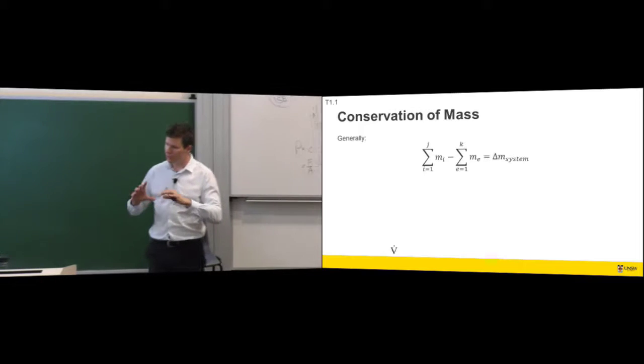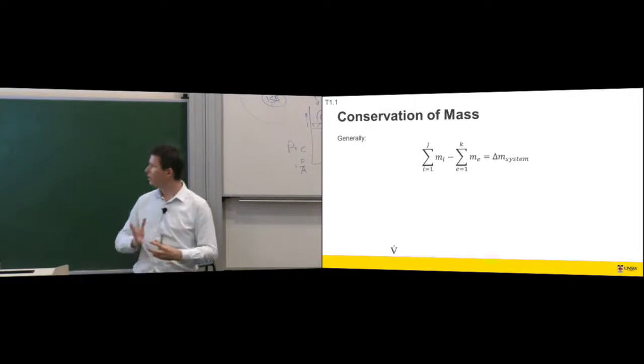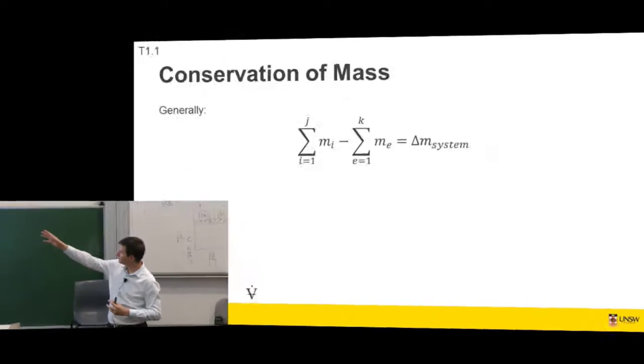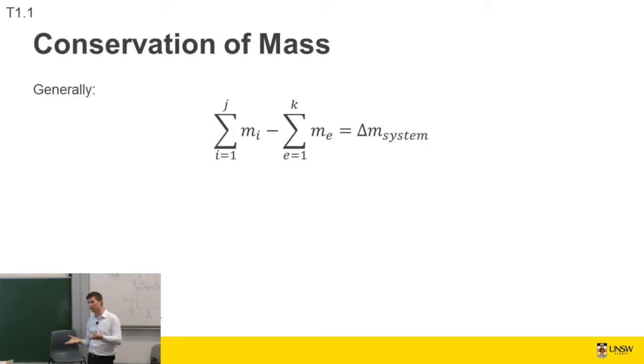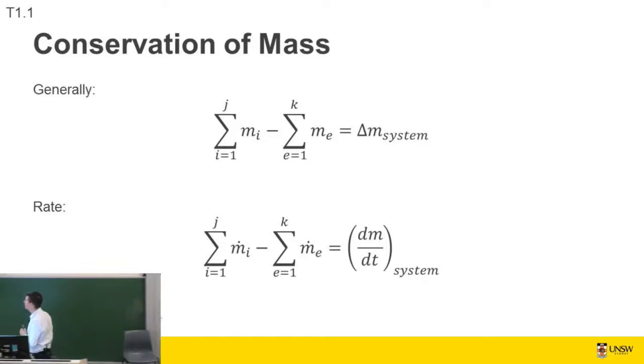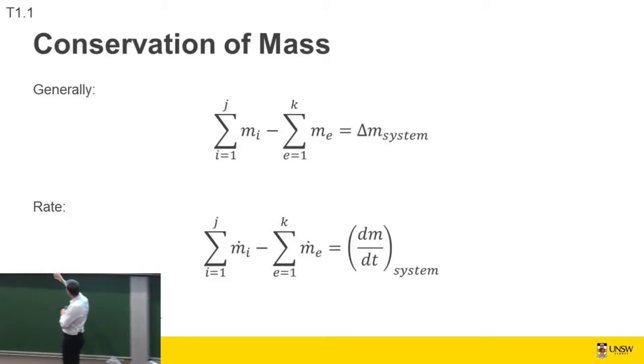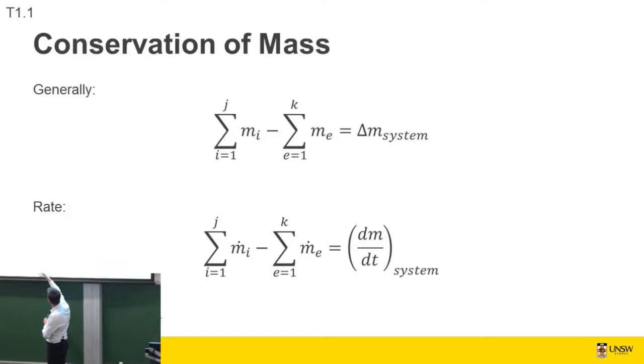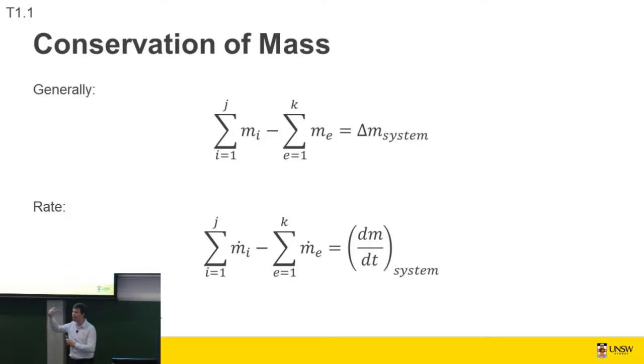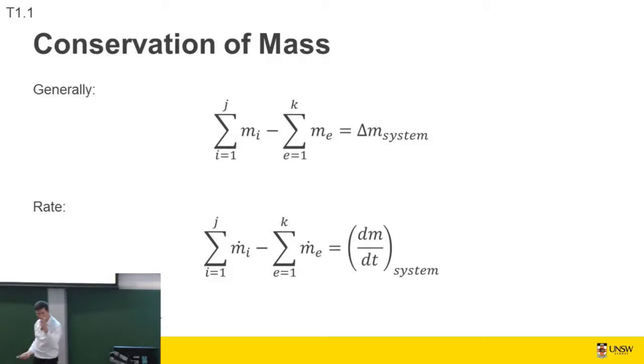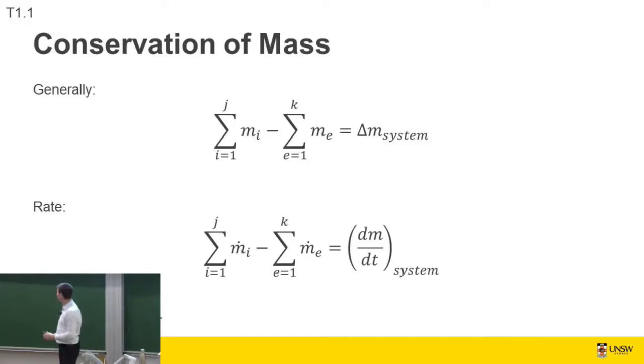Because mass must be conserved, if you've got mass coming into the system, this is just a summation of however many inlets you've got, and you've got mass exiting the system, summation of how many exits you've got, then that must equal the change of mass in the system. Add three kilos, remove one kilo, you're two kilos heavier. On a rate basis, the rate of whatever is coming in minus the rate of whatever is leaving must be the differential rate of mass with respect to time.